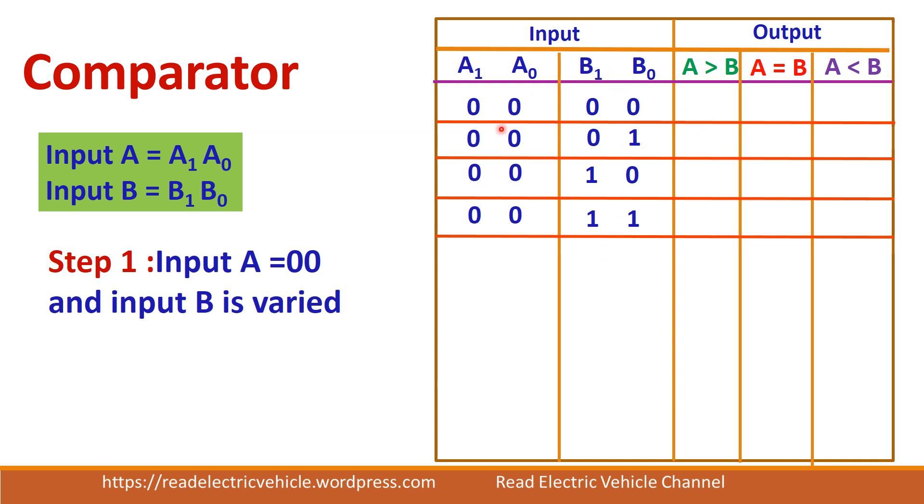Now you do the comparison. Here A and B, both are equal. So here you will get 1 and remaining 2 will be 0. Now you are comparing 0 and 1. So here A is less than B. So A less than B will be 1 and remaining 2 things are 0.